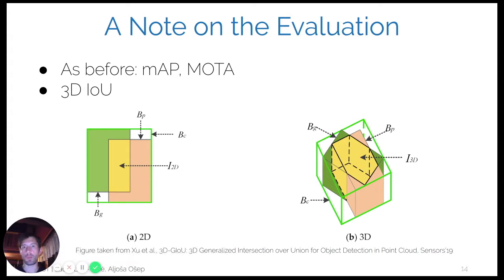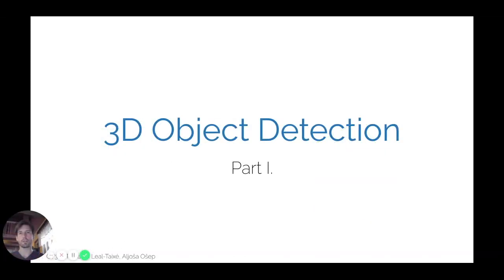Regarding evaluation: the same evaluation measures from previous lectures are used, but the way overlap is computed changes. Instead of 2D intersection over union based on 2D bounding boxes in the image domain, we now compute 3D intersection over union based on 3D bounding boxes. To track objects in 3D space, we also leverage sensors providing 3D point cloud signals. From here, we will assume a LiDAR sensor providing such a 3D point cloud, and since we need to detect objects before tracking them, let's discuss 3D object detection first.